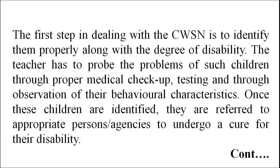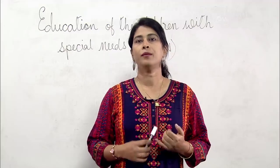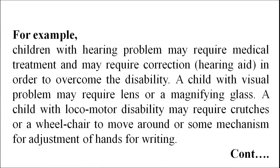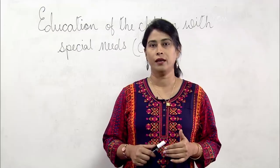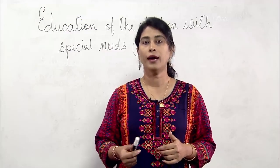Once these children are identified, they are referred to appropriate persons or agencies to undergo a cure for their disability. For example, children with hearing problems may require medical treatment and may require correction like a hearing aid in order to overcome the disability. A child with visual problems may require a lens or a magnifying glass. A child with locomotor disability may require crutches or a wheelchair to move around, or some mechanism for adjustment of hands for writing.